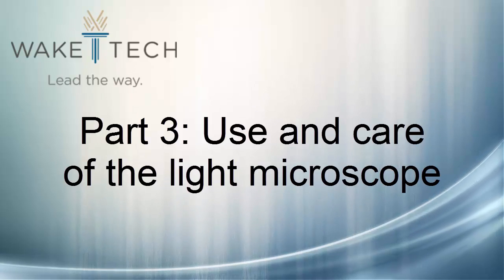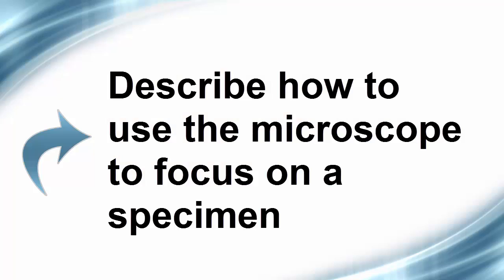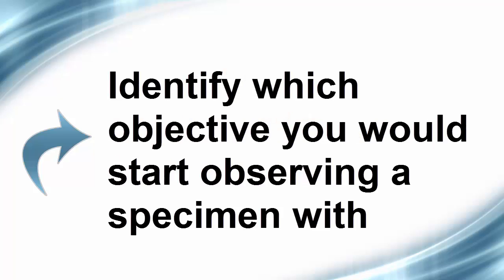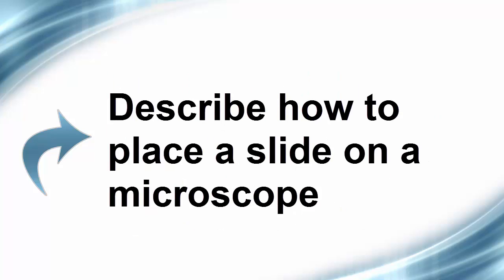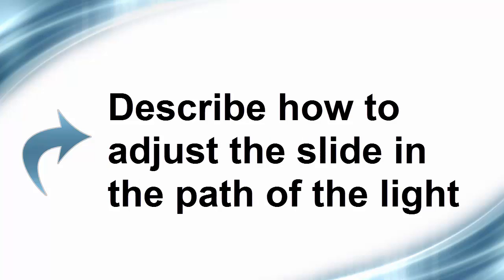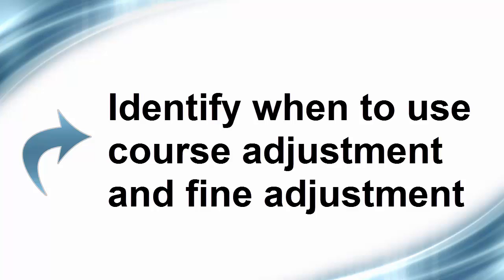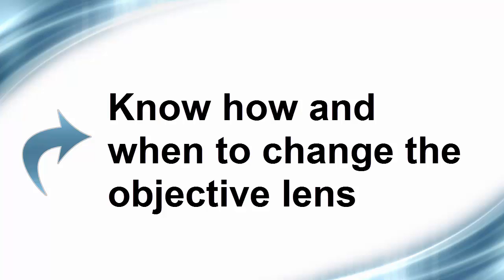At the end of Part 3, you will be able to describe how to use the microscope to focus on a specimen, identify which objective you would start observing a specimen with, describe how to place a slide on a microscope, describe how to adjust the slide so it is in the path of the light, identify when to use the coarse adjustment and when to use the fine adjustment, and know how and when to change the objective lens.